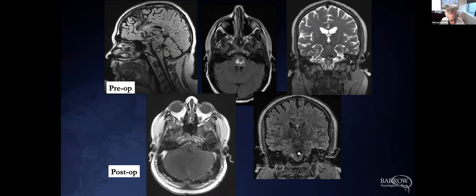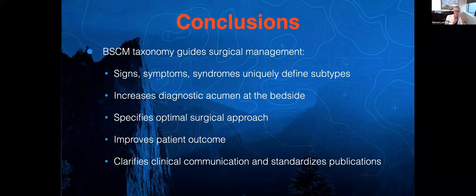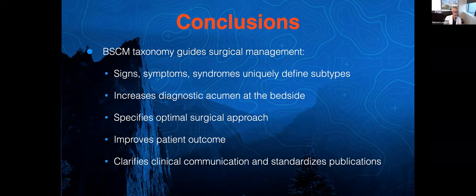So, just to wrap this up, we've developed this taxonomy because it guides our surgical management. We can interpret the signs and symptoms and syndromes so that they really match perfectly the different subtypes or the different names for these lesions. It makes us better diagnosticians at the bedside. More importantly, it tells us the best surgical approach. And when we make those good decisions, we get better outcomes for patients. It's also a way to, what I think will clarify communication and help us speak the same language when it comes to cavernous malformations. Because as it stands now, the language and the detail needs a little work. So with that, I'm going to stop. I wanted to keep this a little bit on the brief side so that we can open it up for questions.